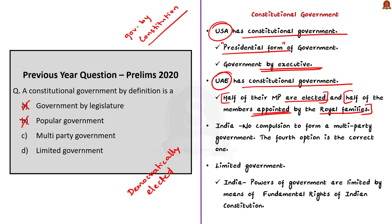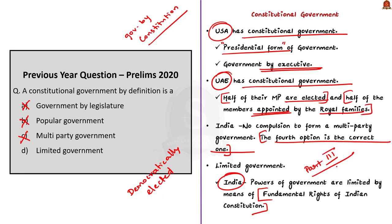Moving on to the third option: multi-party government. India has a constitutional government, but there is no compulsion to form a multi-party government — there have been instances where a single party formed the government with a clear majority. So this statement is also not correct. The fourth option, limited government, is the correct one. In a constitutional government, the powers of the government are limited by the constitution. In India, the power of the government is limited by means of fundamental rights enshrined in Part 3 of the Indian Constitution, protecting citizens against state action. So the answer is Option D.